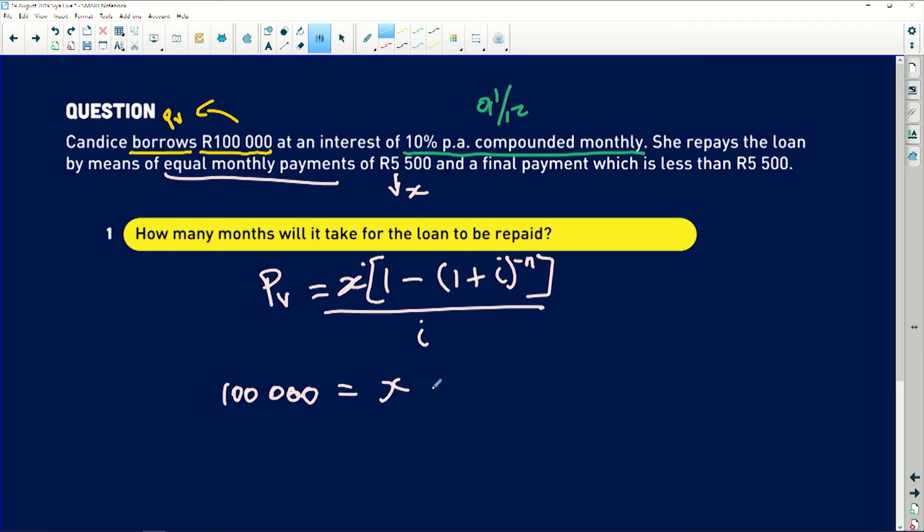So this is X, or rather not X, but it's R5,500 which we are given. So it's 100,000 equals 5,500 times [1 minus (1 + 0.1/12) to the exponent of negative 12n], and then I close my bracket divided by 0.1 divided by 12.